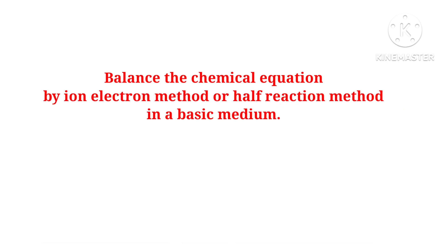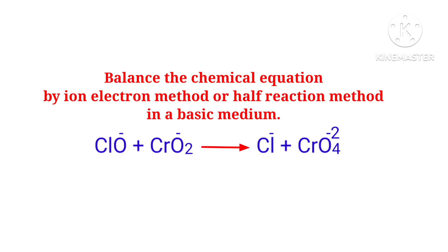Balance the chemical equation by the ion electron method, or half reaction method, in a basic medium. The reaction is: hypochlorite ion plus chromium oxide ion gives chloride ion plus chromate ion.